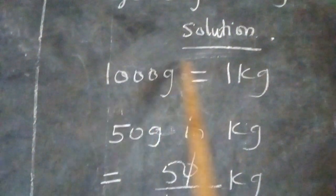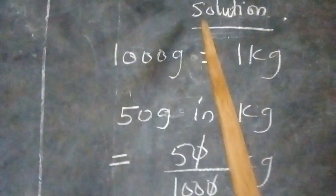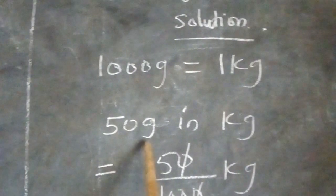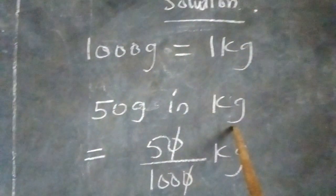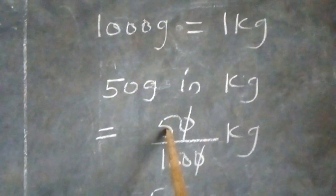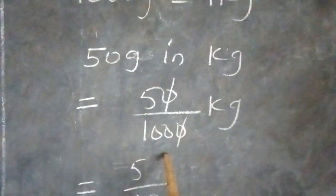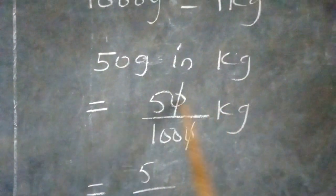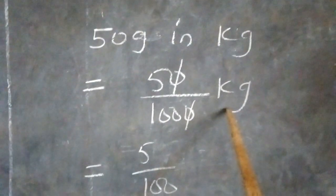1000 grams gives us one kilogram. So for 50 grams that we are asked to convert to kilograms, it will be 50 divided by 1000. So when we divide 50 by 1000, the value is now in kilograms, no more in grams.